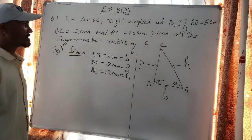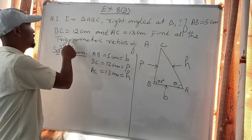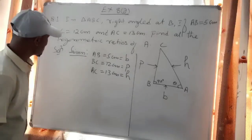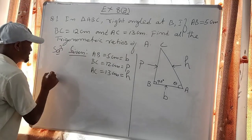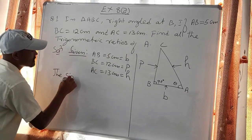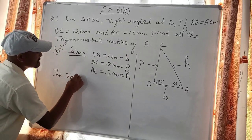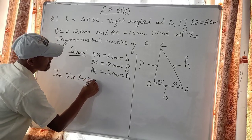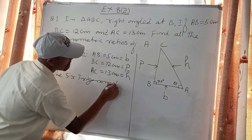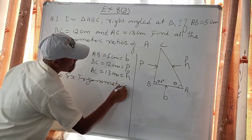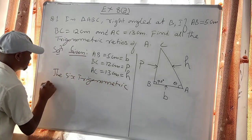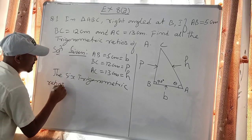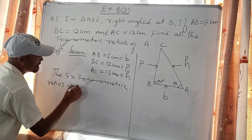So now let us find the six trigonometric ratios of A.